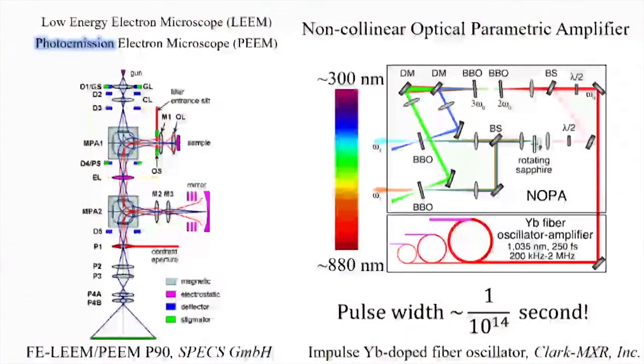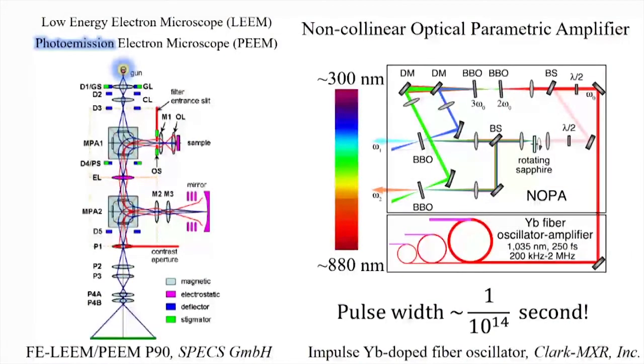In the LEEM mode, the reflected electrons from the sample form an image of the surface topography, while in PEEM mode, photoelectrons generated by ultra-short pulses form an image of the surface polarization field. The excitation light pulses are as short as 15 femtoseconds, which allows us to observe electron dynamics on a femtosecond timescale.